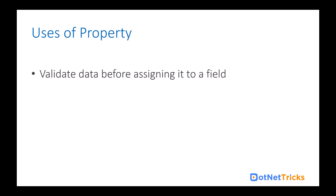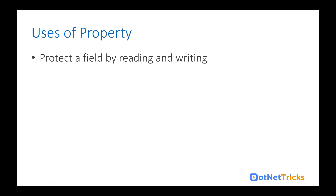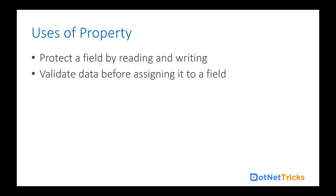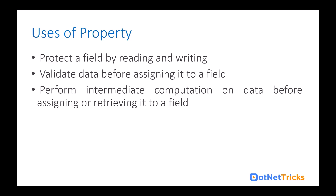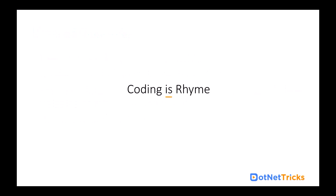Now let's see what the uses of a property are — why we should create properties. Properties protect a field by controlling reading and writing — we cannot directly set or read a field's value from outside the class. Properties also help us validate data before assigning it to a field. We can apply validation logic in the set accessor, perform intermediate computation on data before assigning or retrieving it, and even log all accesses.